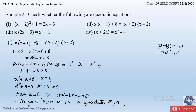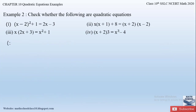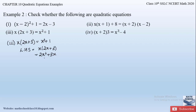Now the third part of the example: x(2x + 3) = x² + 1. Let us first simplify the left-hand side: x(2x + 3). Opening the bracket and multiplying: 2x × x = 2x², and 3 × x = 3x. So the left-hand side is 2x² + 3x.